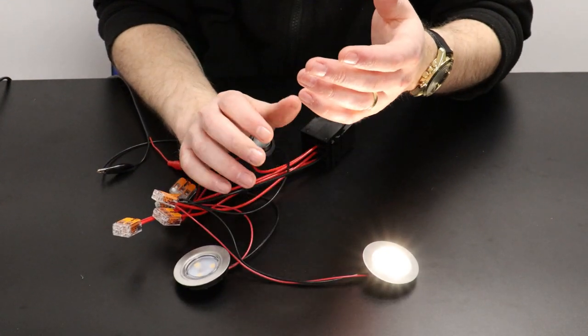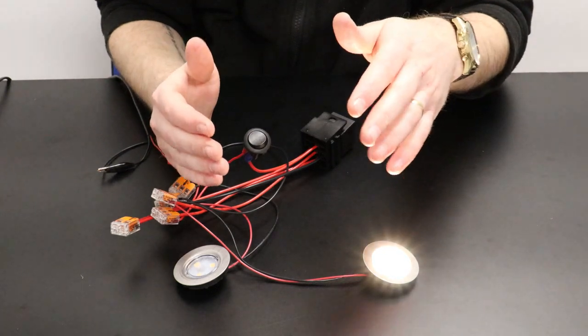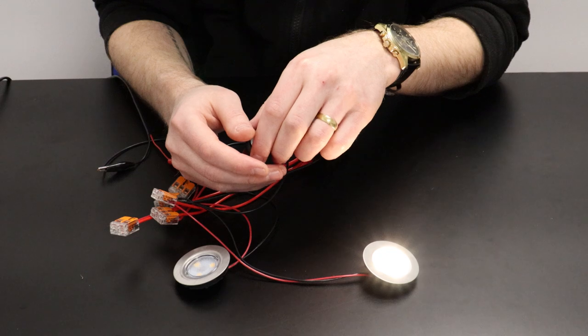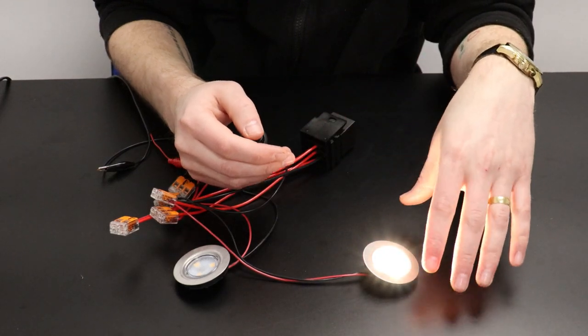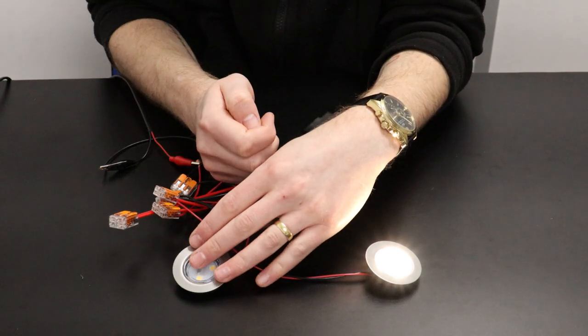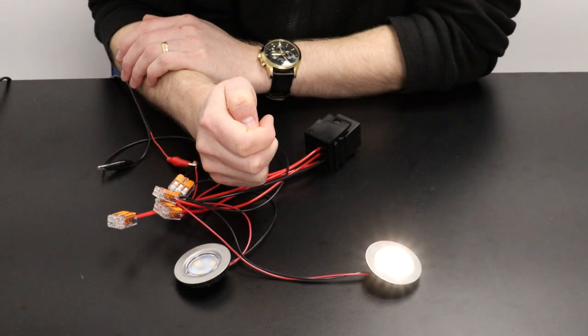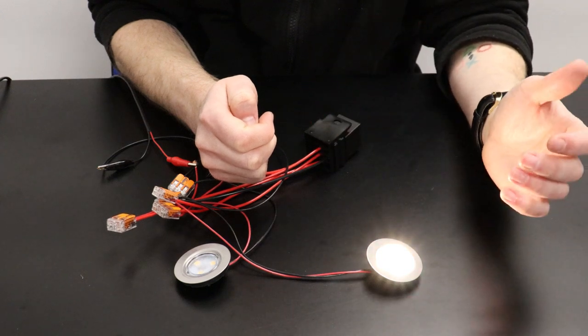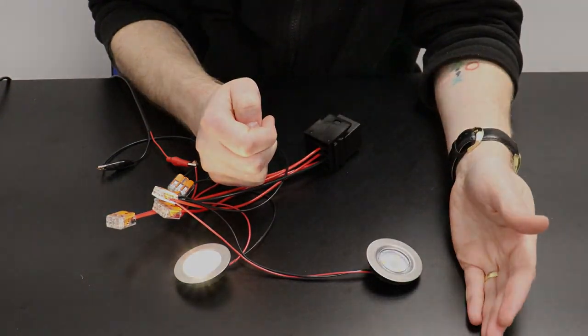One typical use for these type of relays are your high and low beams on headlight circuits. So low beam would be connected to the normally closed 87A. High beam to the normally open 87. The low beam then would be on as default and then as the coil is energized the high beam comes on and your low beam stays off.